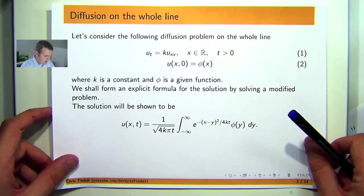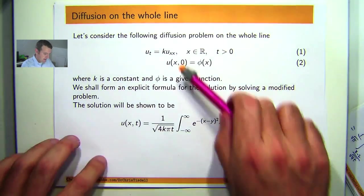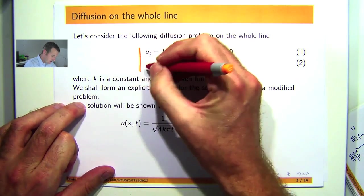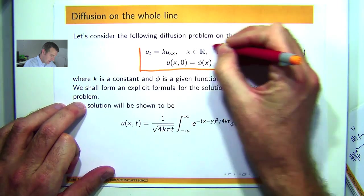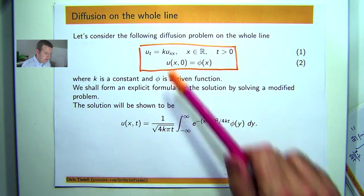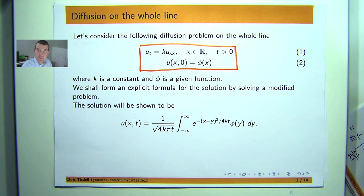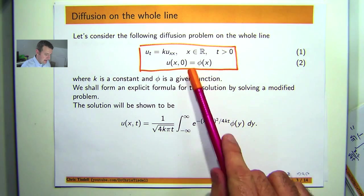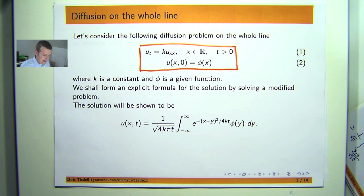Now in previous videos we've been looking at this general diffusion type equation coupled with this Cauchy data, so t here would represent time, x would represent position and u would represent for example temperature at position x time t, and this phi is a given function that would denote the initial temperature.